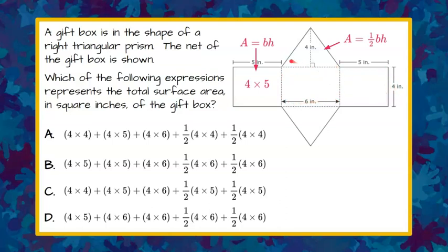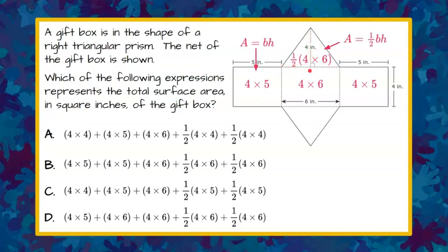So each one of these is four, and then we have a four by six and a four by five. Then we identify the triangles — one half, with a height of four and a base of six. That other triangle is identical.